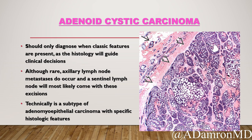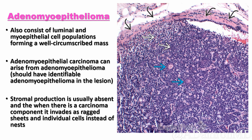We should only classify adenoid cystic carcinoma when these classic features are present, because the histology guides clinical decisions - like whether only excision is needed regardless of the Oncotype score, since it's going to behave well. Although rare, even with this diagnosis on biopsy, surgeons will probably still perform an axillary sentinel node biopsy with excision. Technically, ACC is a subtype of adenomyoepithelial carcinoma with those specific histologic features. Now, adenomyopithelioma is a benign lesion composed of luminal and myoepithelial cell populations - well-circumscribed, very low-grade masses. An adenomyoepithelial carcinoma can arise from these, with the epithelial and/or myoepithelial component undergoing malignant transformation.